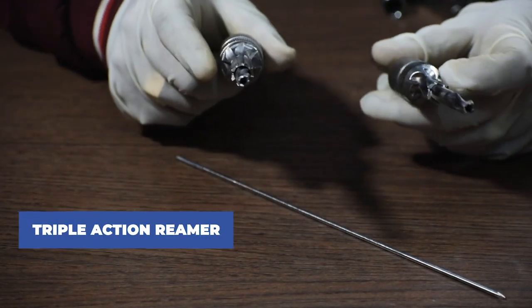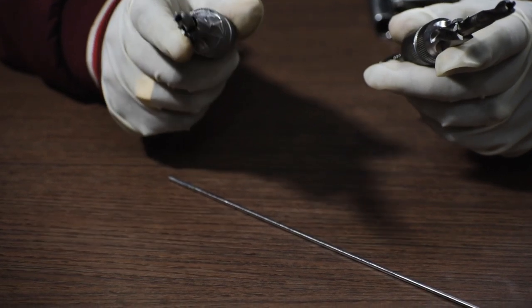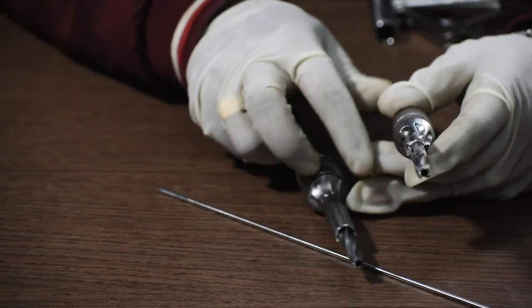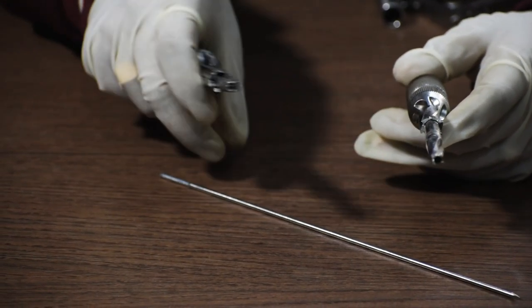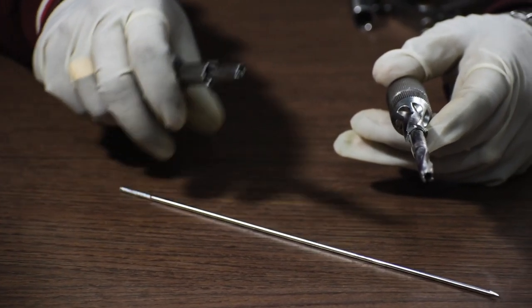After this we take a triple reamer, either a long barrel or a short barrel. If the measurement in the measuring scale comes above 80mm, we will use a long barrel triple reamer. And if it is below 80mm, we will use a short barrel.